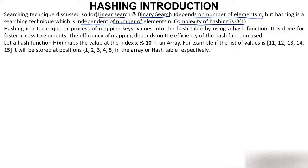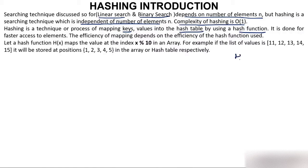Hashing is a technique or process of mapping keys into a hash table by using a hash function. Keys are the values which you want to map. When you apply hash function H on key K, it gives you a location L, and that location acts as an index in the hash table.